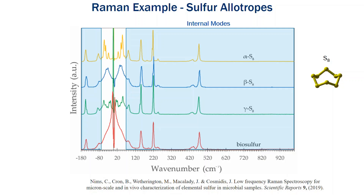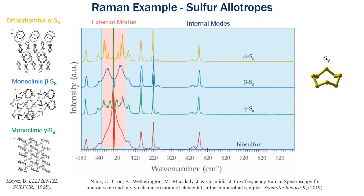When we look at the low frequency region of the Raman spectra, this is referred to as the external modes, or in the case of a crystalline material, these are the lattice modes of your material. Shown on the left are the different crystal structures of alpha, beta, and gamma S8. What we see is they're uniquely different, and correspondingly the low frequency response in the Raman is uniquely different.